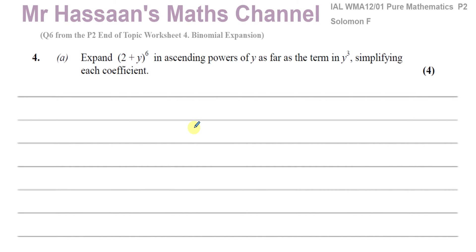Welcome back to Mr. Hassan's Maths Channel. This is question number 4 from the Solomon F collection of C2, which has now become P2. So this is under my P2 end-of-topic worksheet, number 4 of binomial expansion. Question number 6 from my worksheet, question number 4 from the Solomon F collection. We have to expand (2 + y)^6 in ascending powers of y, as far as the term in y cubed, simplifying each coefficient.